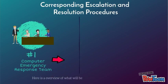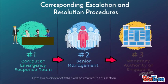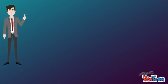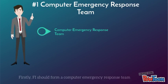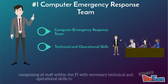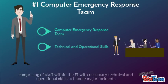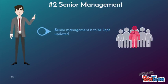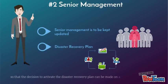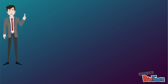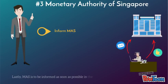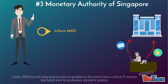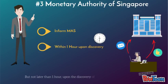Here is an overview of what will be covered in this section. Firstly, the FI should form a computer emergency response team comprising staff within the FI with the necessary technical and operational skills to handle major incidents. Next, senior management is to be kept updated on the development of major incidents so that a decision to activate a disaster recovery plan can be made on a timely basis. Lastly, MAS is to be informed as soon as possible in the event that a critical IT system has failed over to a disaster recovery system, but not later than one hour upon the discovery of a relevant incident.